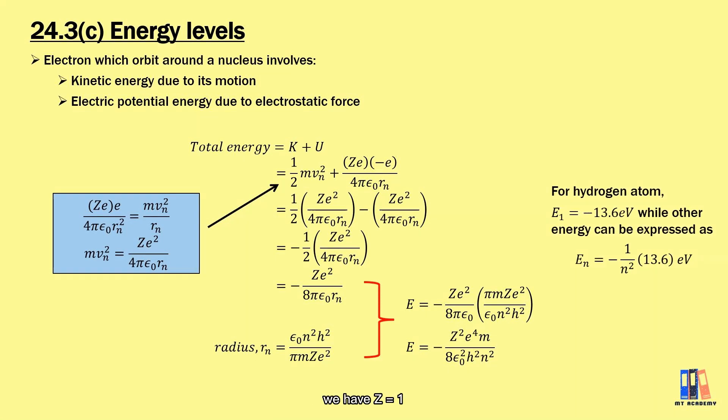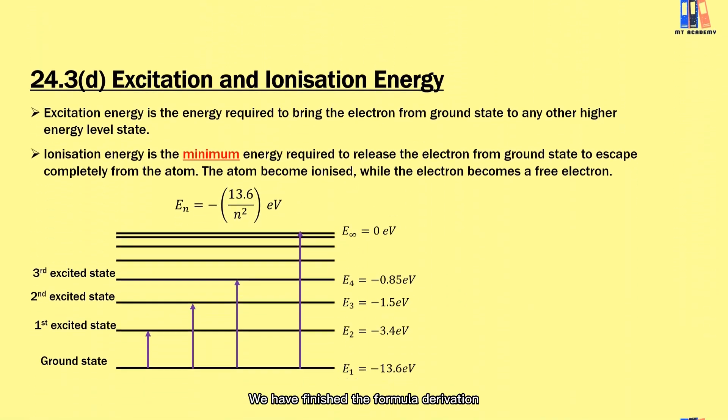For hydrogen atom, we have Z equals 1 and we can put in all the constant values. For the first orbit of hydrogen atom, it is -13.6 eV, while others can be expressed as -1/n² multiplied by the energy level of first orbit. So we have finished the formula derivation.